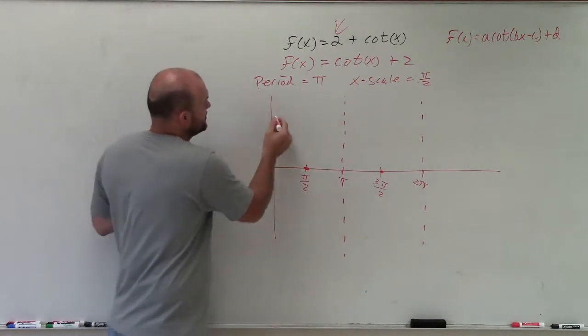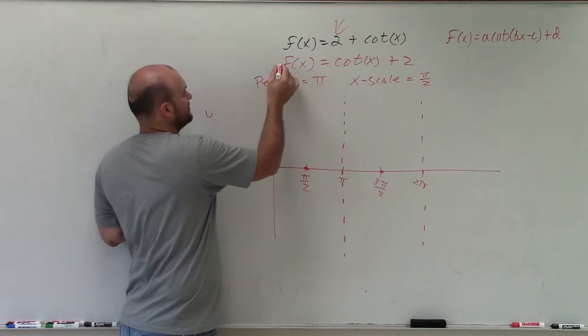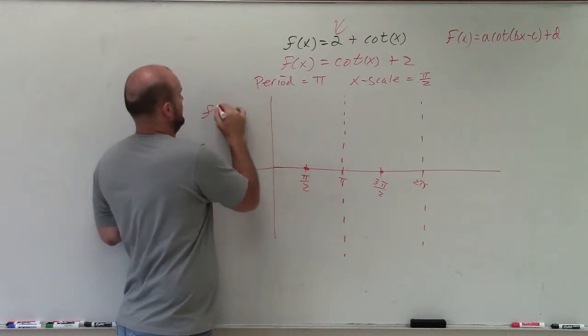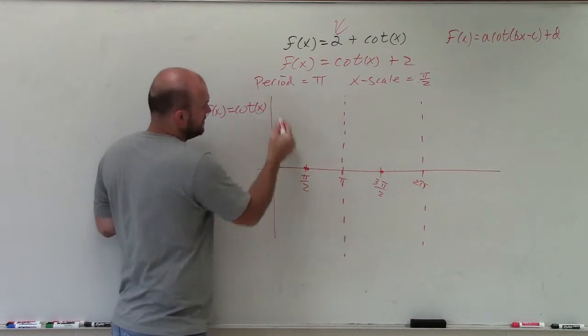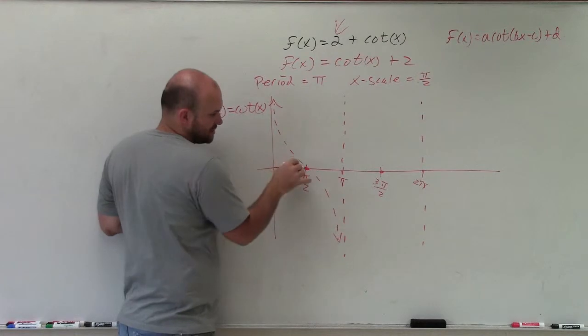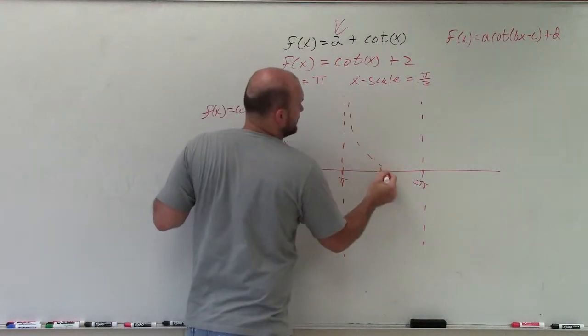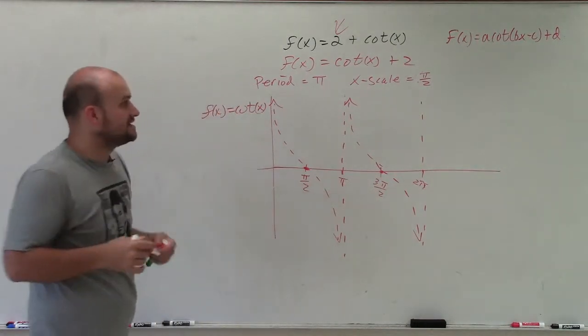So to graph this, here is what I'm graphing: f(x) = cot(x). That's what I'm graphing right here. So remember, the graph approaches the asymptotes. It's going to go in this direction, cross at this x-scale, and then this one's going to follow the same pattern. That is cot(x).